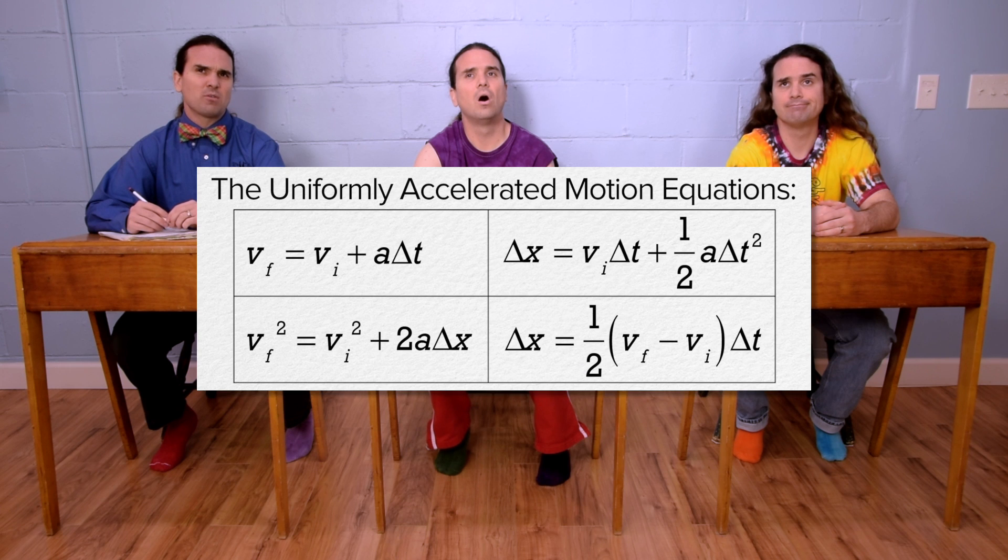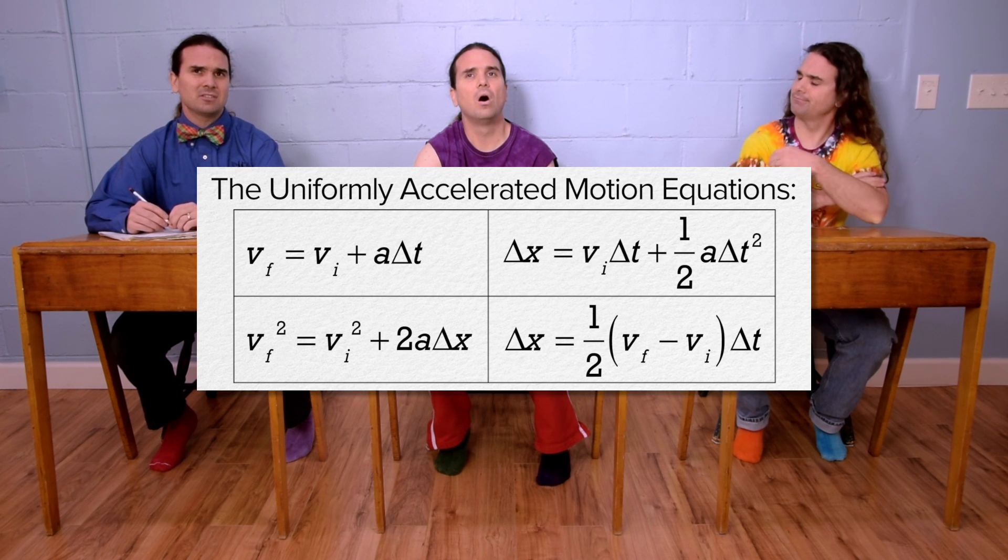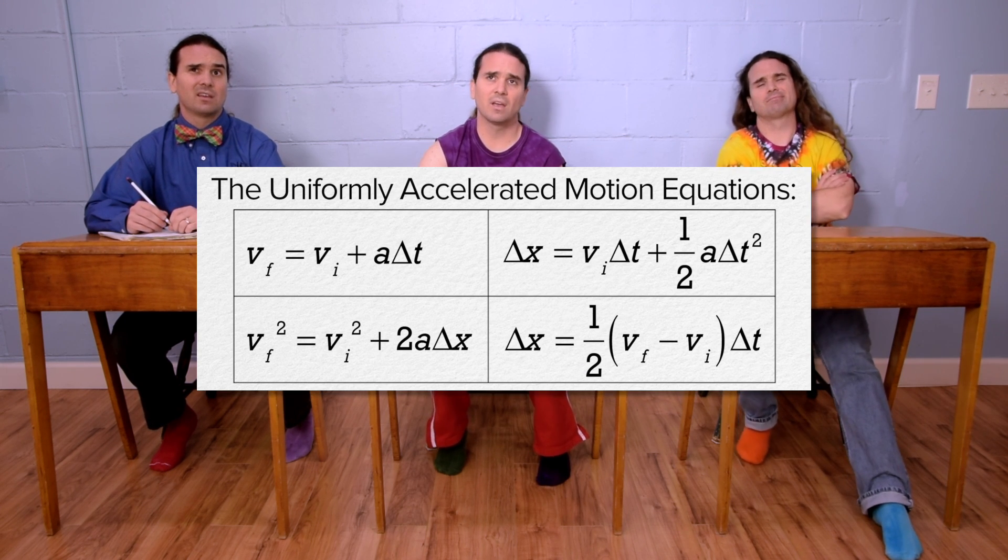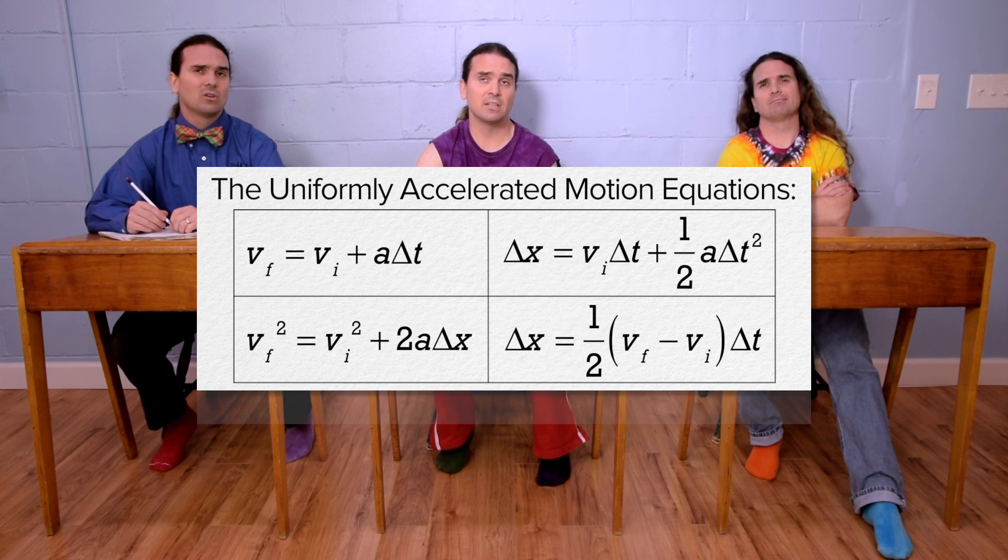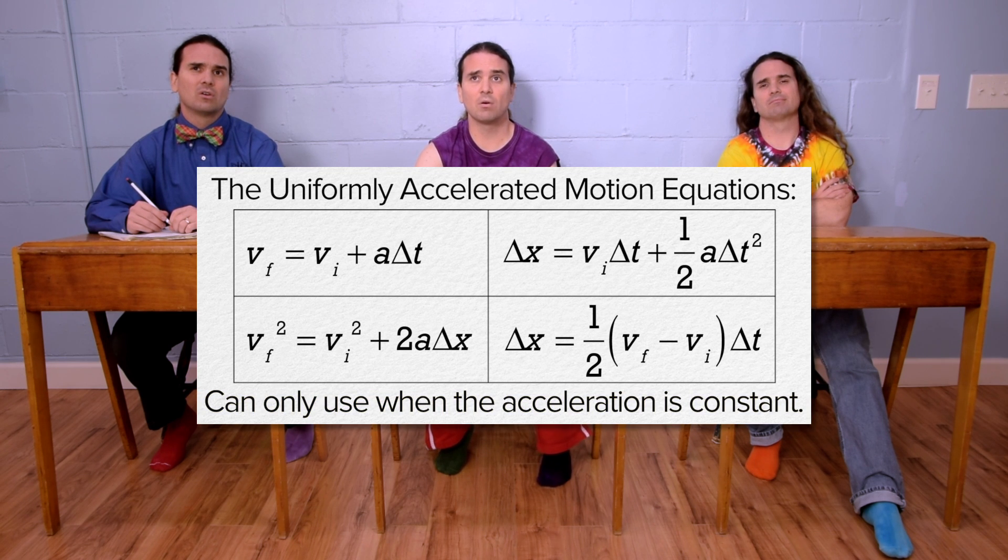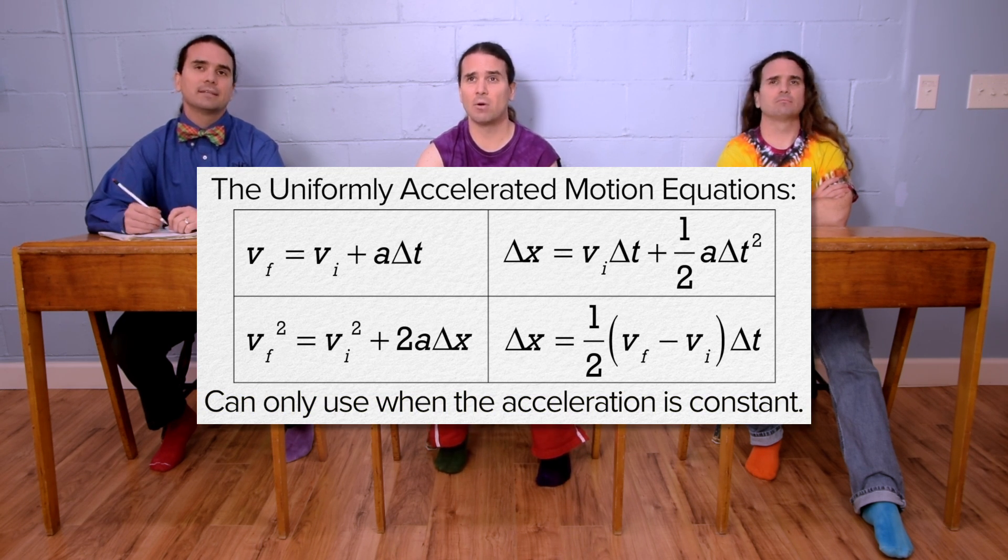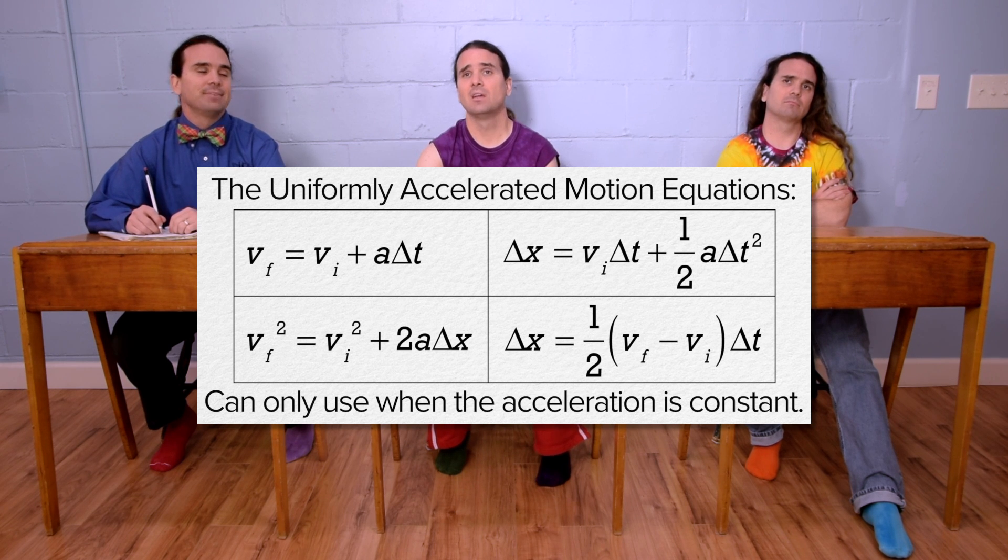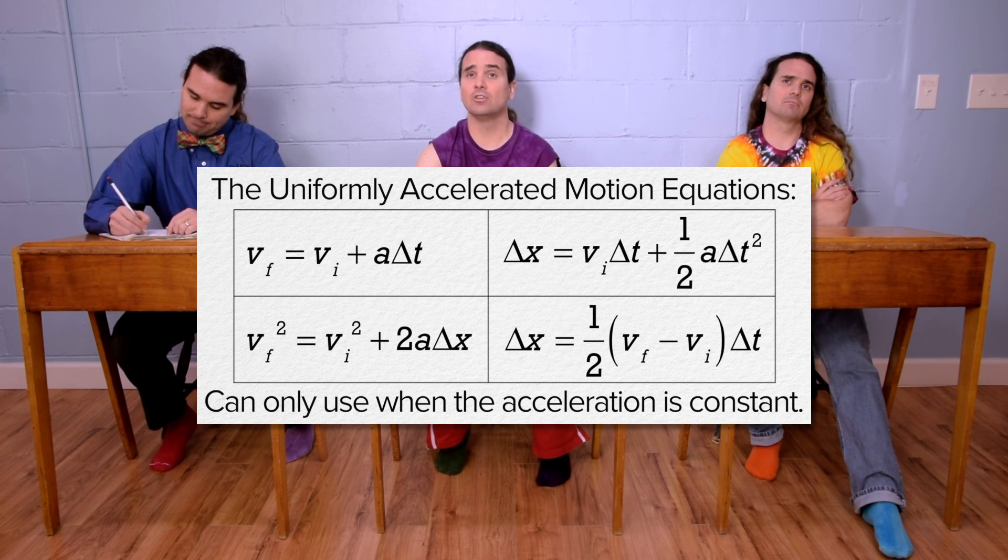Can we not just use the uniformly accelerated motion equations to solve this? No, we can't. The acceleration due to gravity decreases as Bo is moving away from the planet. So, we cannot use the uniformly accelerated motion equations. And actually, that is why we have to use the universal gravitational potential energy equation.